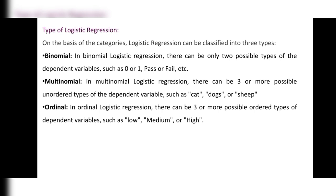In multinomial logistic regression, there can be three or more possible unordered types of the dependent variables, such as cats, dogs, or sheep — three or more possible outputs. In ordinal logistic regression, there can be three or more possible ordered types of dependent variables, such as low, medium, or high.